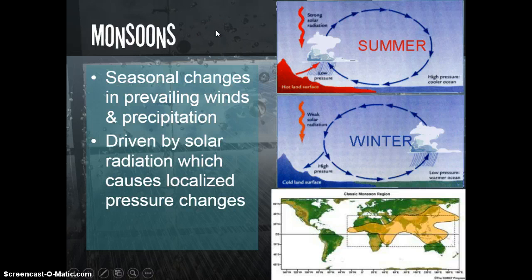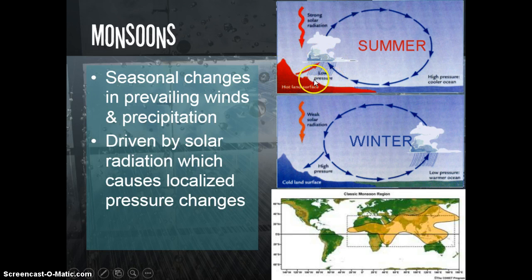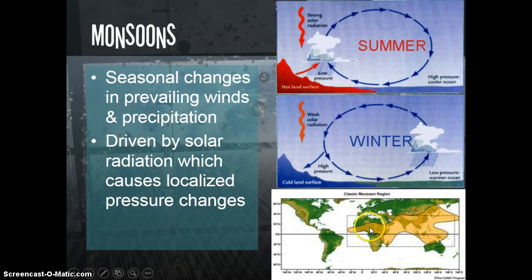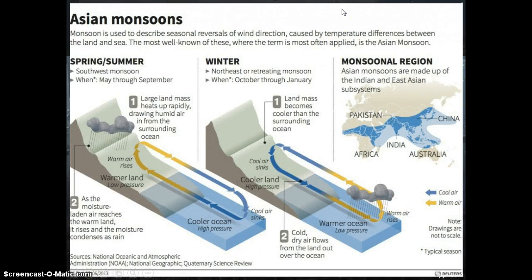Another thing affected by these patterns is monsoons — seasonal changes in both winds and precipitation patterns due to differences in solar radiation. In summer, intense solar radiation causes low pressure areas to develop over hot land surfaces, pulling in moisture from the ocean and causing huge downpours. In winter, the opposite happens: the cold land surface causes water to move out over the ocean. Areas in monsoon regions experience both wet and dry seasons depending on temperature. Next class, we'll put this all together and talk about how deserts form as a result of these patterns.